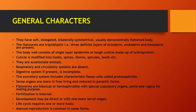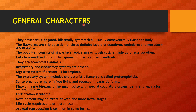Now we will see the general characters. They are soft, elongated, and bilaterally symmetrical. They are dorso-ventrally flattened. They are triploblastic, meaning they have 3 germinal layers — that is ectoderm, endoderm, and mesoderm.